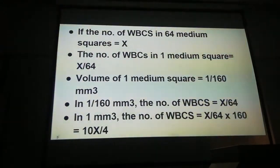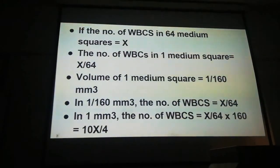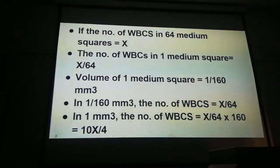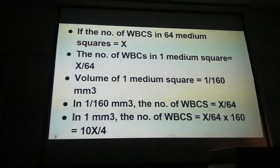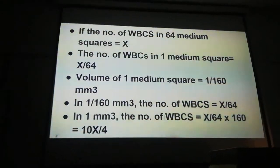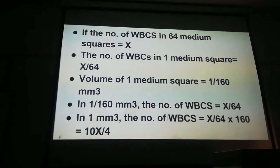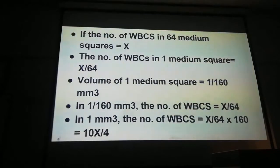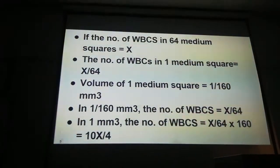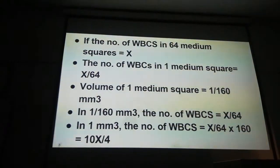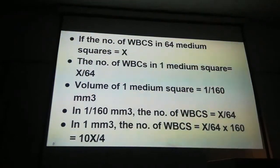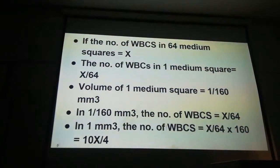In 1/160 mm³, the number of WBCs is x/64. Therefore, in 1 mm³, the number of WBCs will be x/64 × 160, which equals 10x/4.